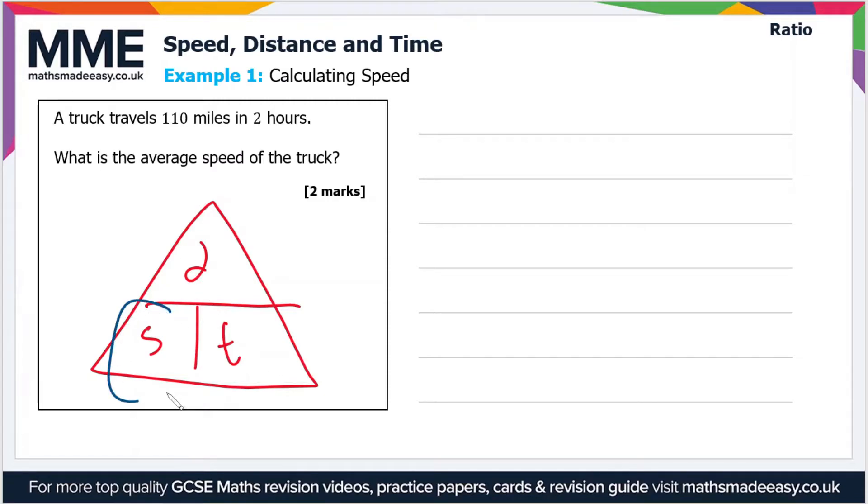So we're after speed, so we divide distance by time. So if the distance is 110 miles and the time is two hours, then the speed is equal to 110 divided by two, which is 55.